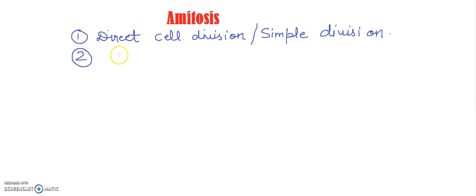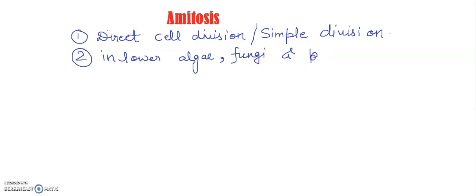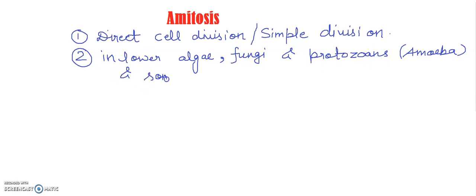If you have a question where this type of cell division is found: mostly it is found in lower algae, fungi, and protozoans — some protozoans like Amoeba. It is also found in some old cells in higher plants.